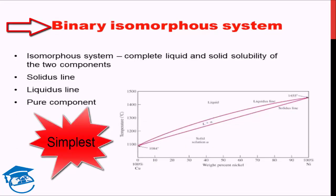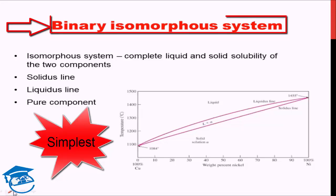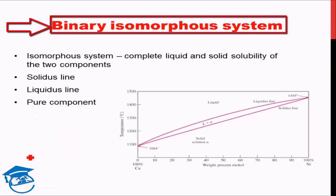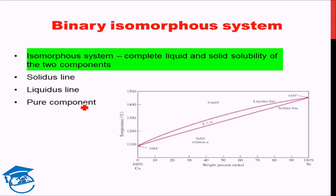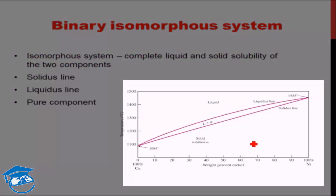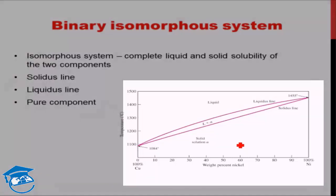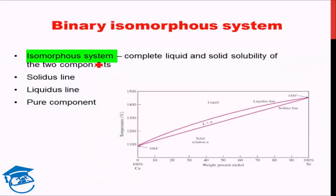This is the simplest kind of binary phase diagram, known as a binary isomorphous system. Isomorphous means there is complete solubility of the two components in both the liquid and the solid phase. There is no precipitate formation — complete liquid solubility and complete solid solubility. In the common intermediate region there is both liquid and solid present.